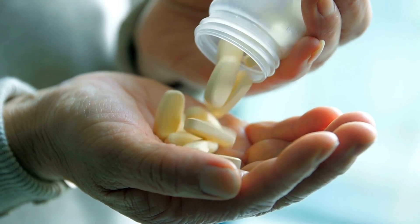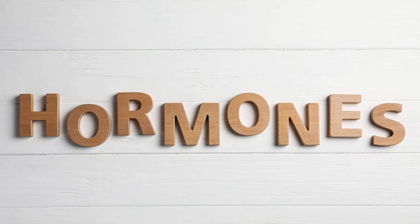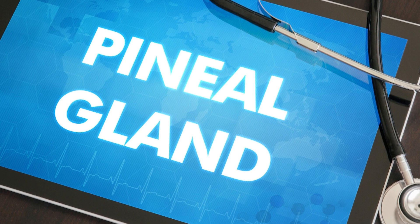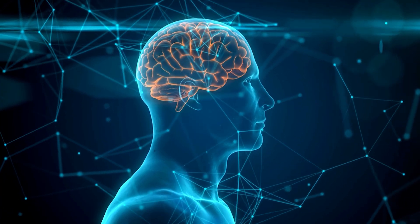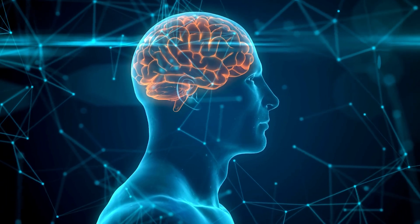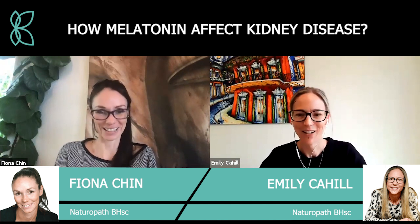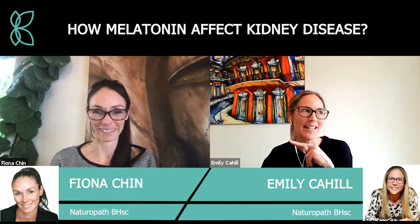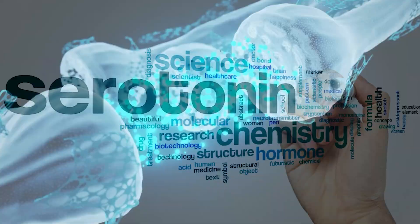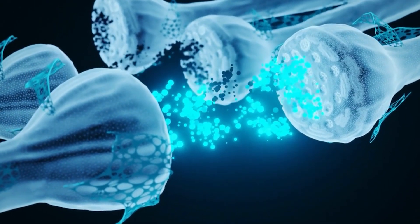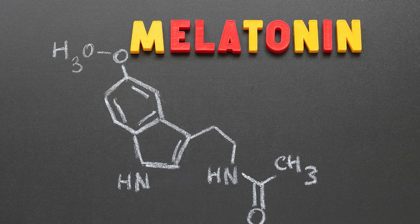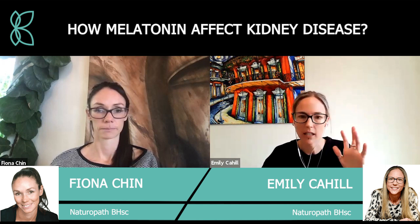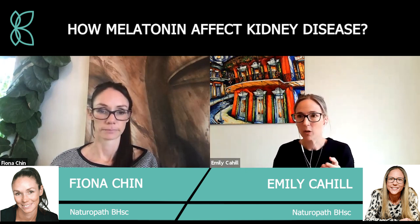So melatonin is a hormone and it's produced by our pineal gland, which is in our brain. It's made in the pineal gland from serotonin — one of our neurotransmitters — and it gets converted from serotonin into melatonin. We release it in response to light and darkness.